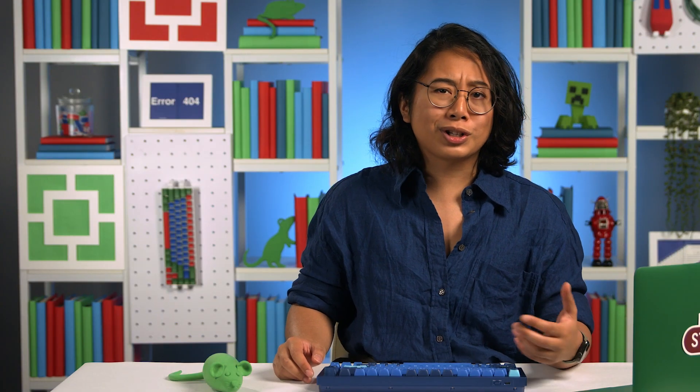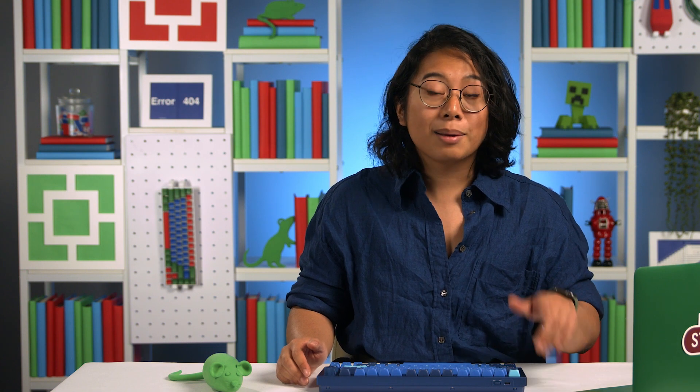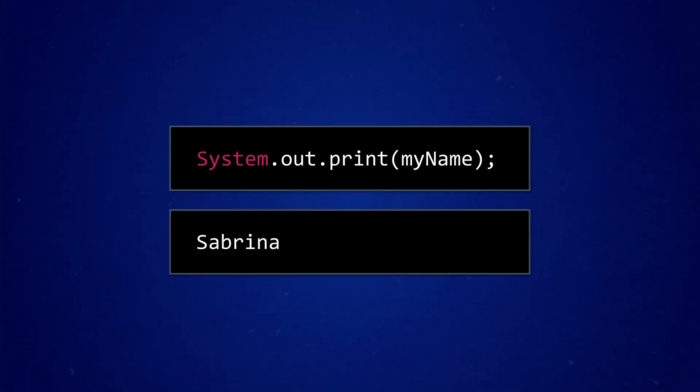But we often don't want the computer to just output the same thing every time. A lot of the time, we're creating a program to solve a problem, and if we already had all of the answers, we wouldn't need computers. Fortunately, we can use this same type of print statement to output different things by using variables. A variable is a piece of data that we name, and whose value we can change throughout the program. Those changes often happen behind the scenes, so if we want to display the current value of a variable, we can include the variable in our print statement without any quotes.